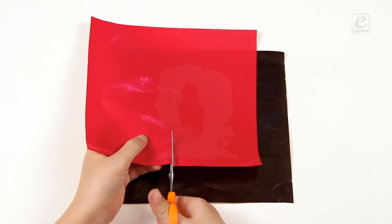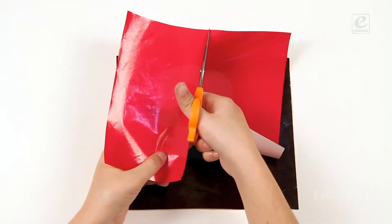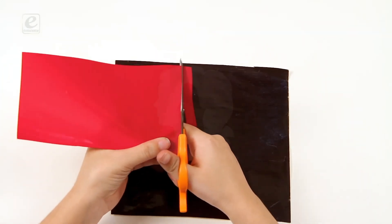Now cut thin strips of red and black glazed papers. You can also use some other colored papers.